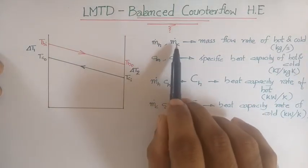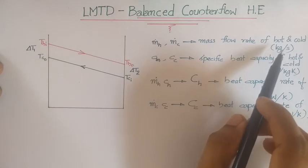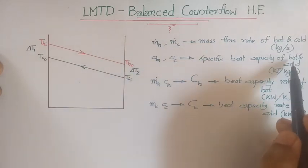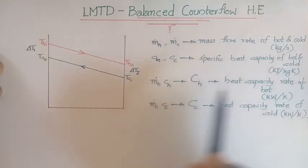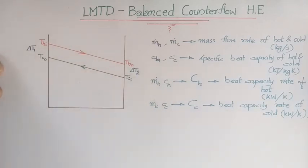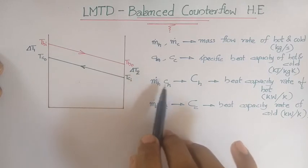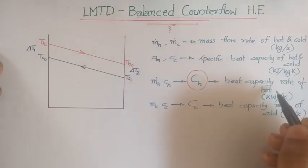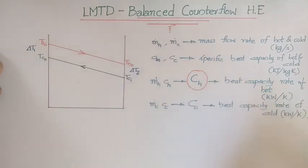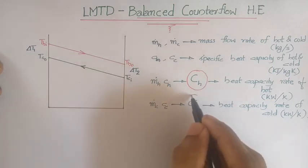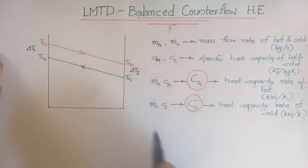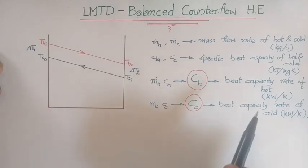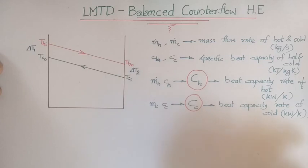M-dot-H and M-dot-C are the mass flow rates of hot and cold fluids in kilogram per second. C_H and C_C are the specific heat capacities of hot and cold fluids in kilojoules per kilogram Kelvin. Multiplying mass flow rate by specific heat capacity gives the heat capacity rate: C_H = M-dot-H × c_H and C_C = M-dot-C × c_C, with units of watts per Kelvin.